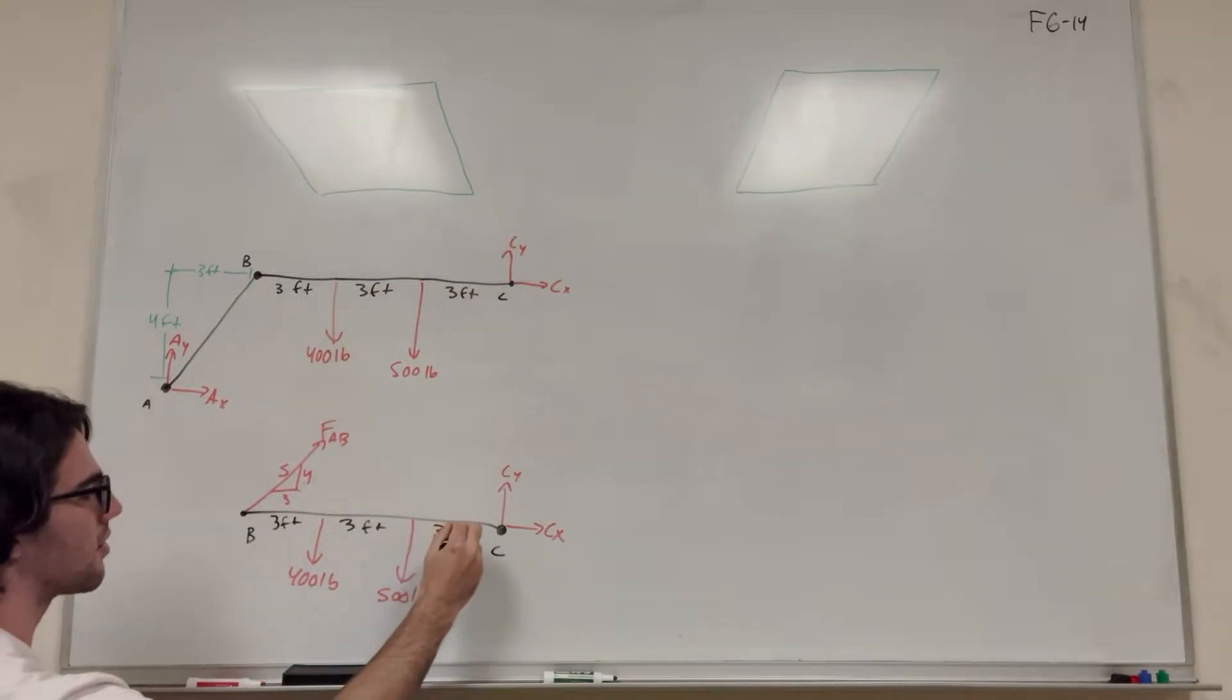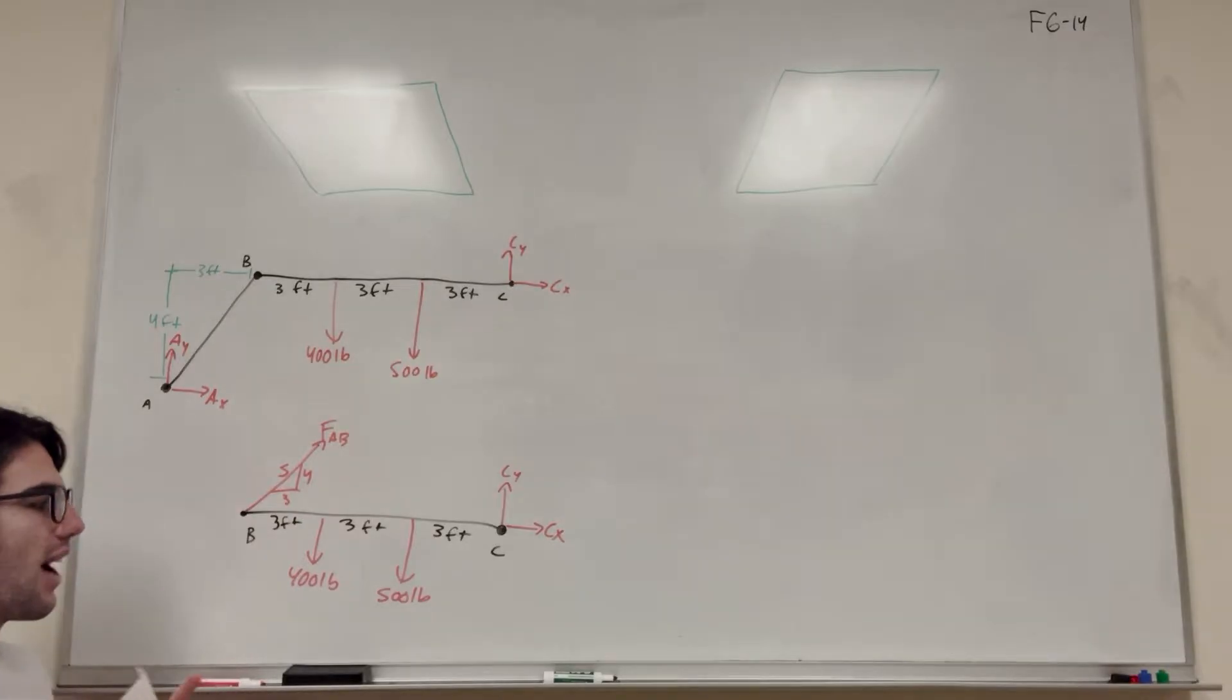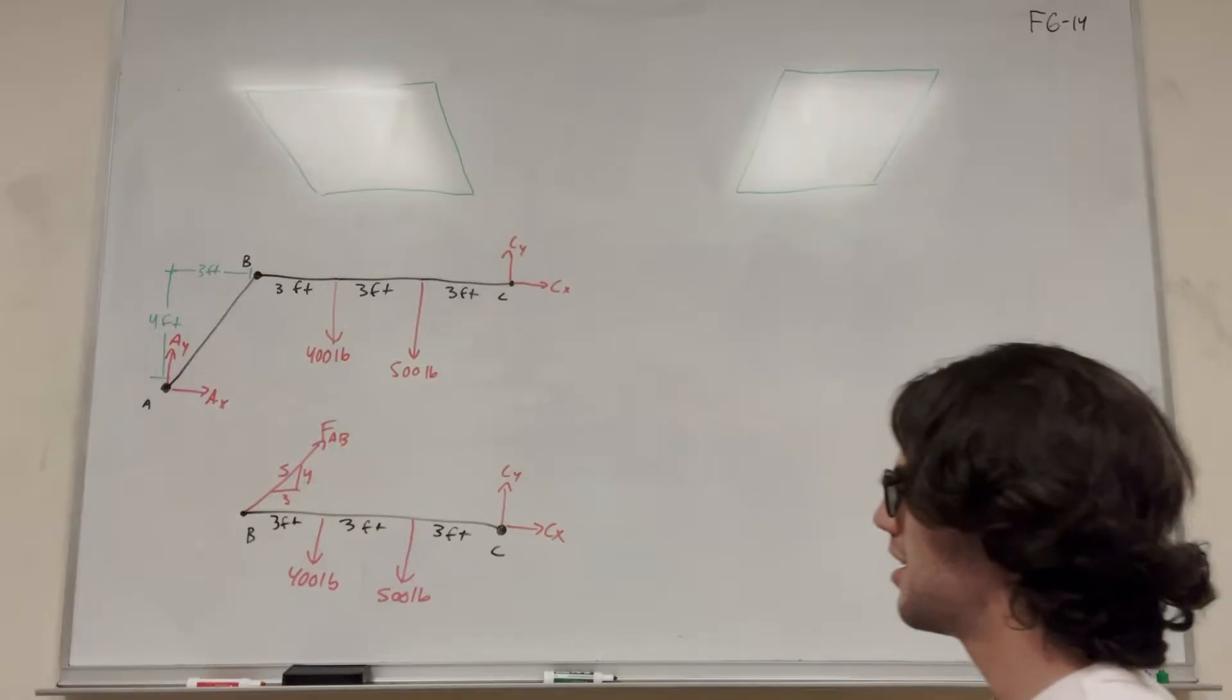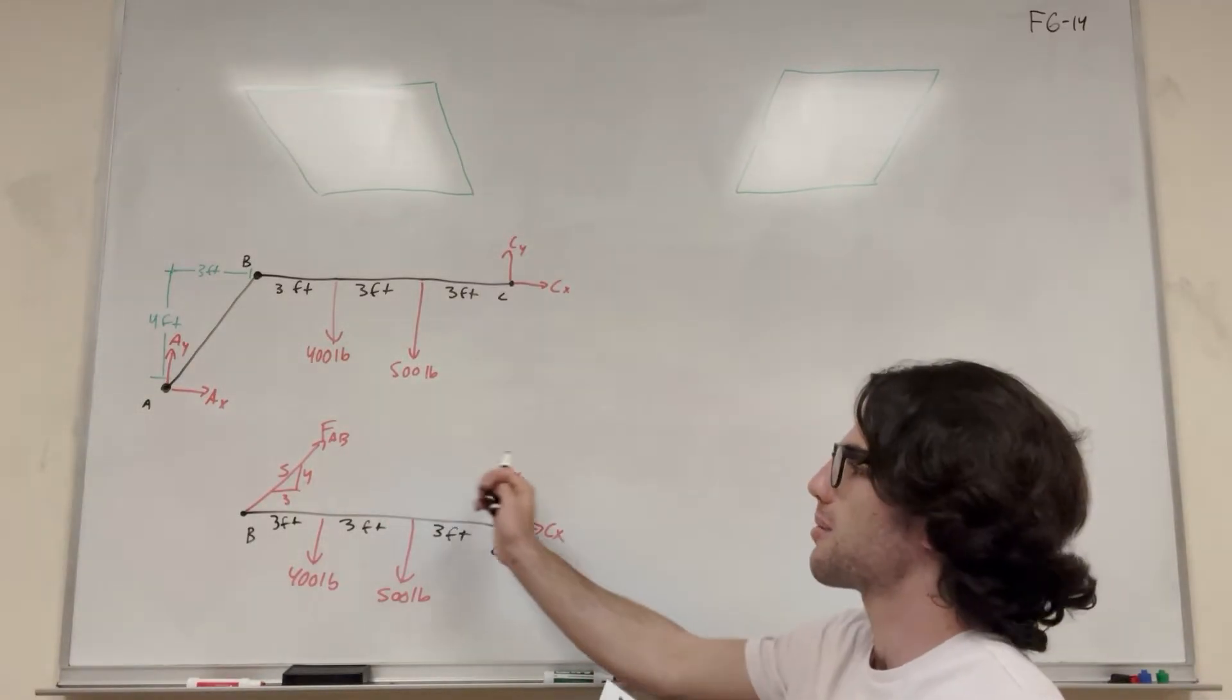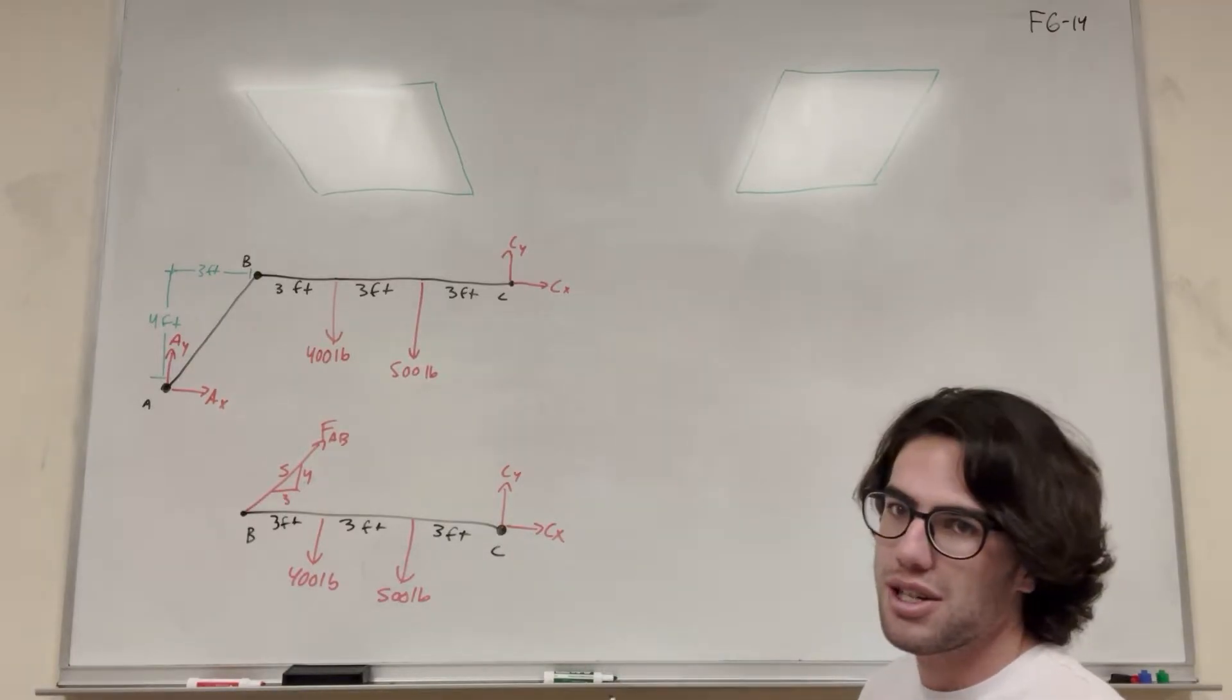Right? Now we only have three unknowns and three equations. So now we can do this. So what we want to do now, if we find force AB then we can just take sum of the forces in the Y and sum of the forces in the X and find C_Y and C_X. Let's go ahead and do that.